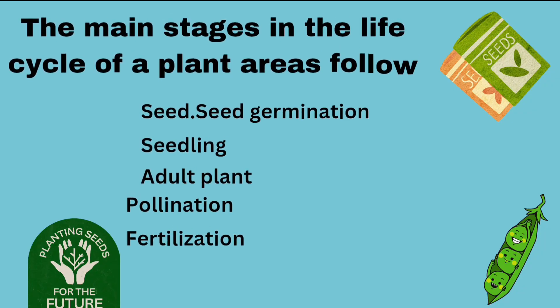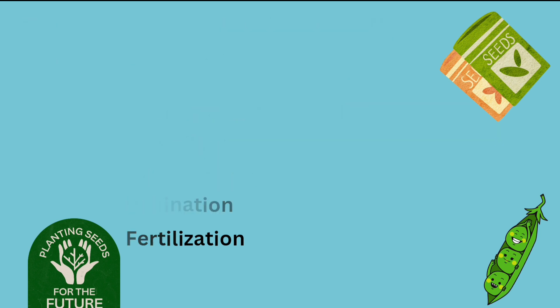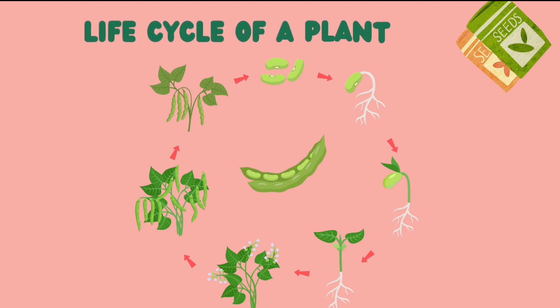The main stages in the life cycle of a plant are: seed, seed germination, seedling, adult plant, pollination, fertilization, and the formation of fruits and seeds. Plants follow a cyclic process of starting a new life, growing, then coming back to the starting stage by reproducing. These are the five stages of a plant life cycle.